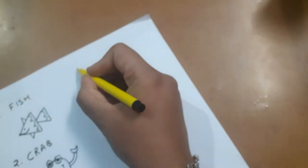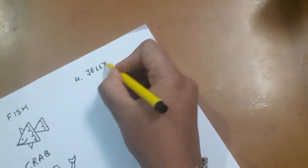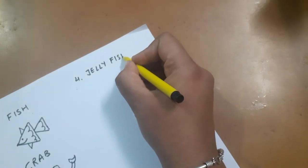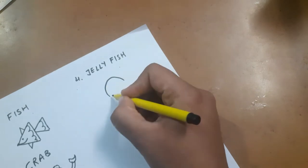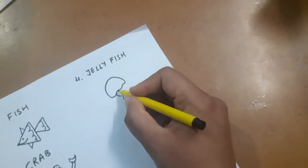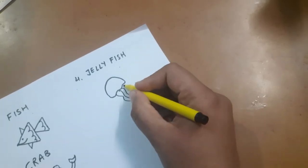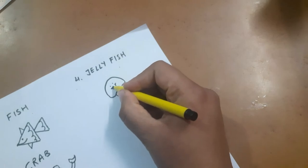Next sea creature that we are going to learn here is jellyfish. Again, very easy. Make a semicircle and then add a curved line like this. Make some more curved lines and the jellyfish is ready.